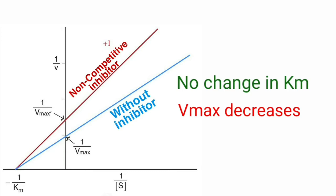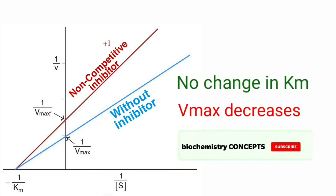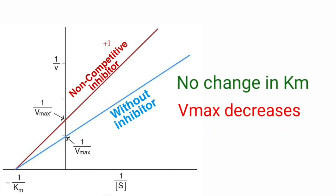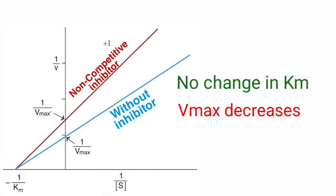A non-competitive inhibitor decreases the concentration of functional enzymes. Because of that, the turnover — that is, the amount of substrate converted to product — is affected, ultimately leading to a decreased maximum velocity. When the concentration of functionally active enzymes decreases, the efficiency to transform substrate to product is affected. This transformation is reflected by maximum velocity, so whenever this efficiency is affected, the maximum velocity decreases in the presence of a non-competitive inhibitor.